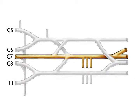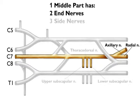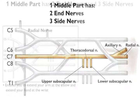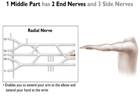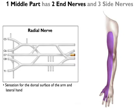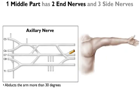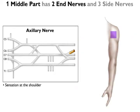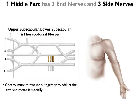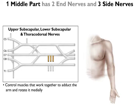Next is the middle part of the plexus. Just like before, one middle part has 2 end nerves and 3 side nerves. The radial nerve enables you to extend your arm at the elbow and extend your hand at the wrist, like a police officer stopping traffic. It also provides sensation for the dorsal surface of the arm and the lateral hand. The axillary nerve allows you to abduct your arm more than 30 degrees. It also provides sensation of the shoulder. The 3 side nerves — the upper subscapular nerve, the lower subscapular nerve, and the thoracodorsal nerve — control muscles that work together to adduct the arm and rotate it medially.